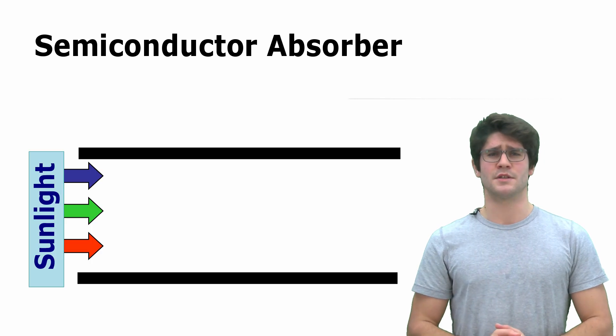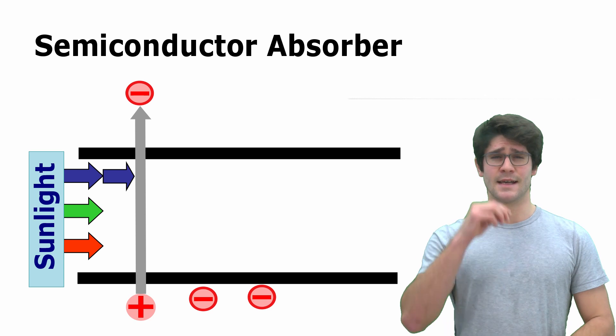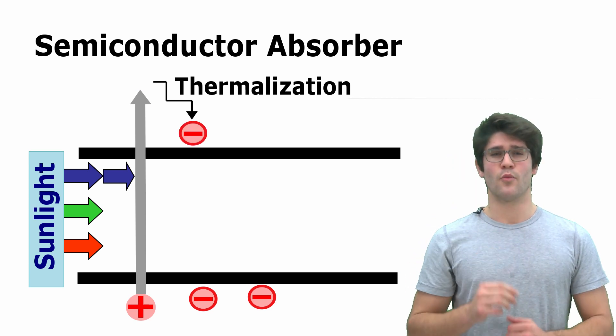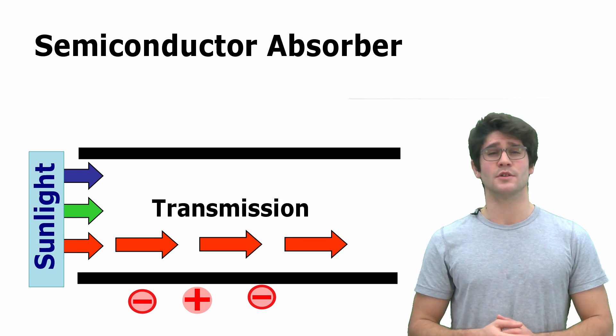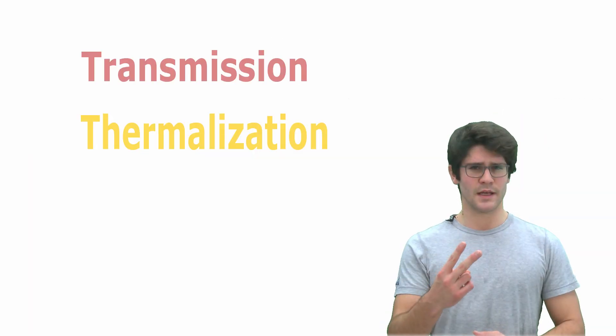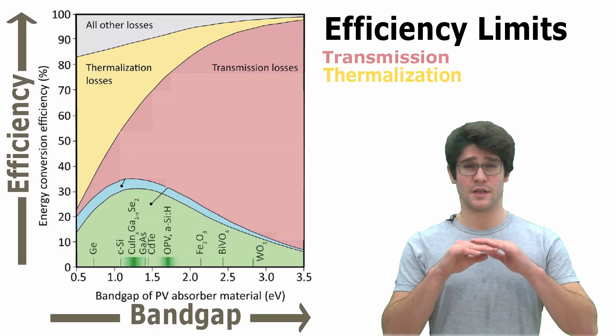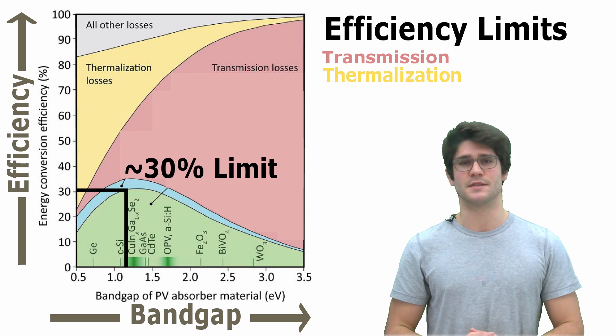But not all of the light energy turns to electricity. After photon absorption, excess energy above the band gap dissipates by carrier thermalization, while a photon with energy less than the band gap is not absorbed, so-called transmission loss. These two losses depend on the material's band gap and establish the theoretical Shockley-Queisser limit, around 30% for crystalline silicon.